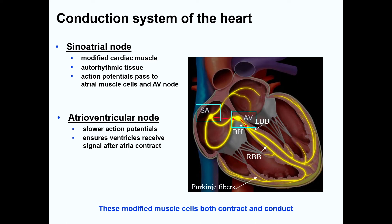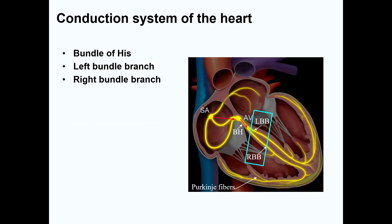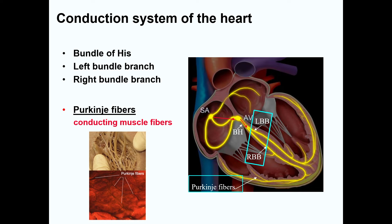Cardiac muscle cells in both of these regions have the ability to both contract and conduct. Histologically, though, there's not much visible to differentiate these from cardiac muscle fibers. Next, the signal moves through the bundle of His and the right and left bundle branches to the Purkinje fibers. These large, specialized fibers conduct the impulse to the ventricular cardiomyocytes, and these fibers are conducting only.